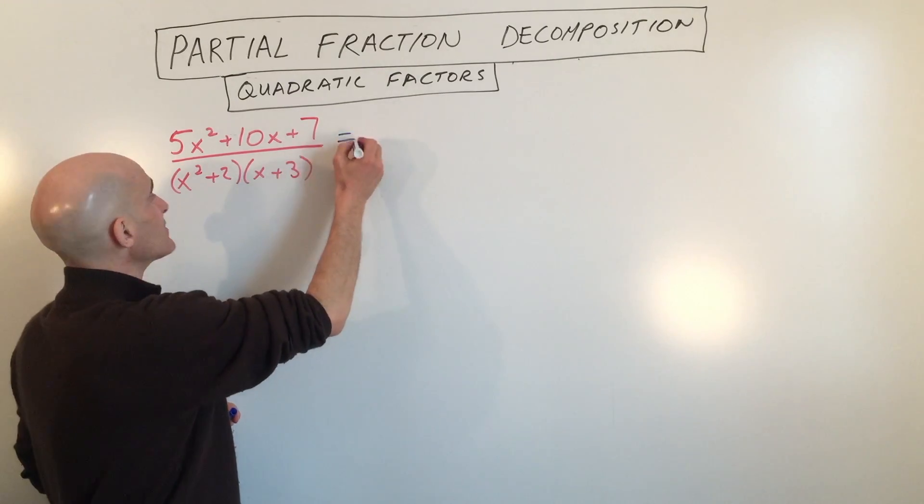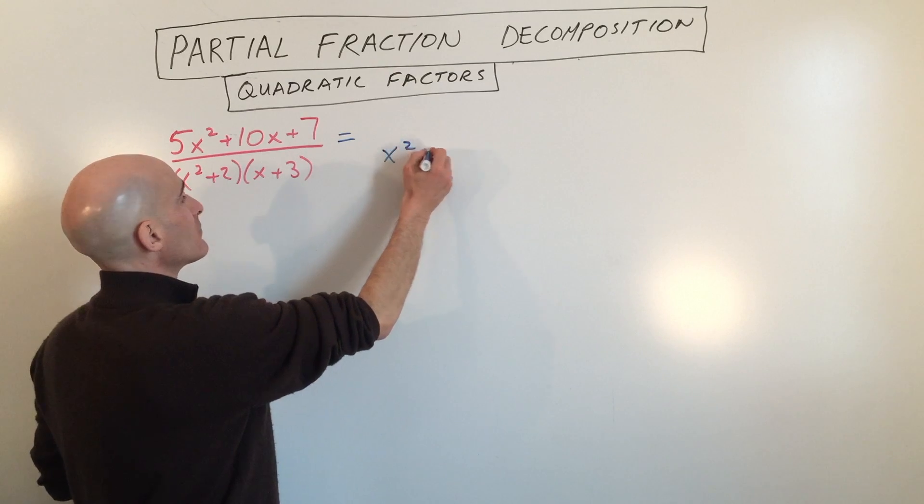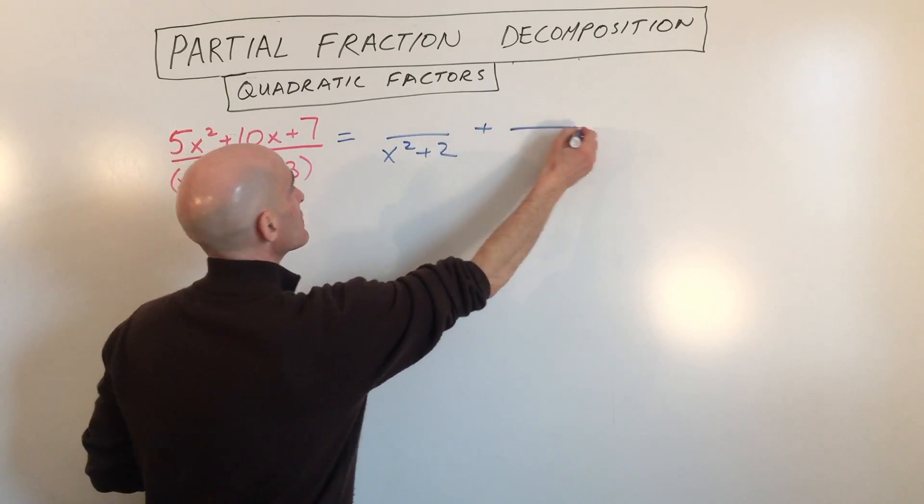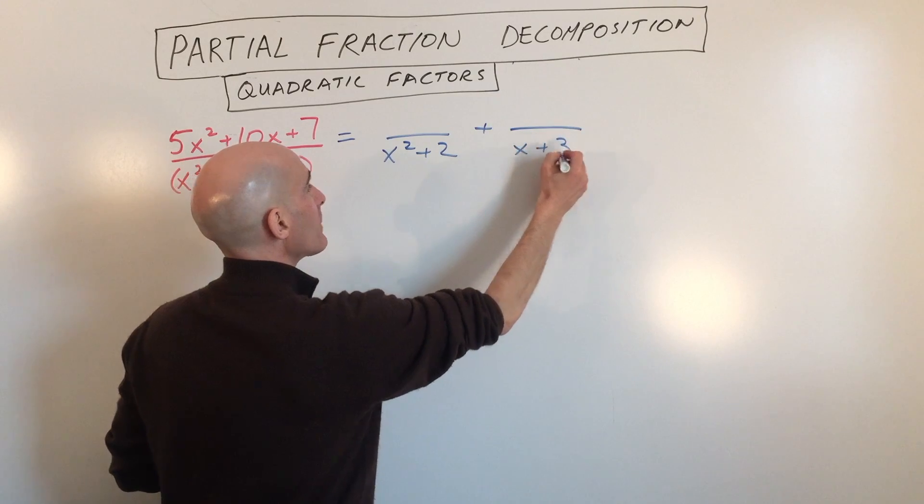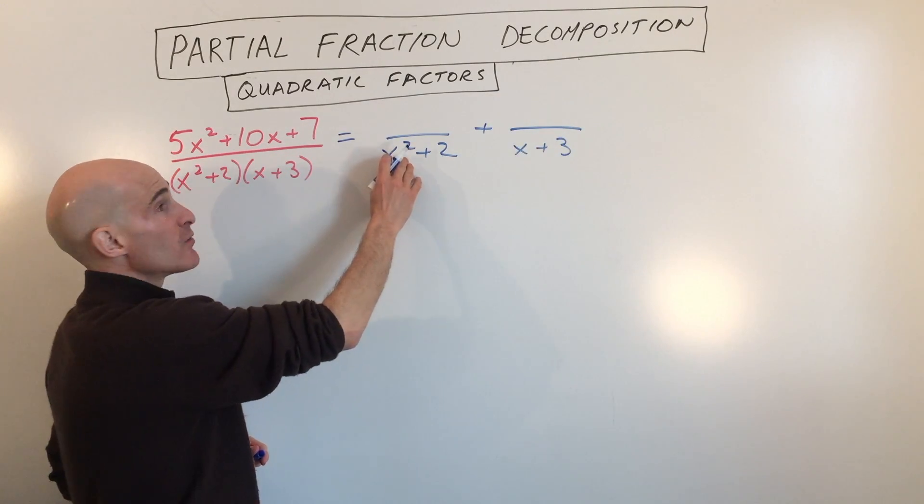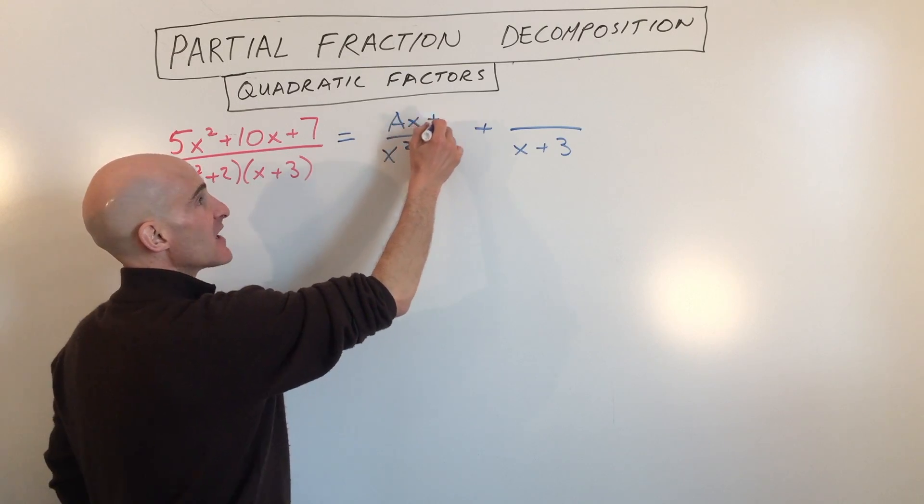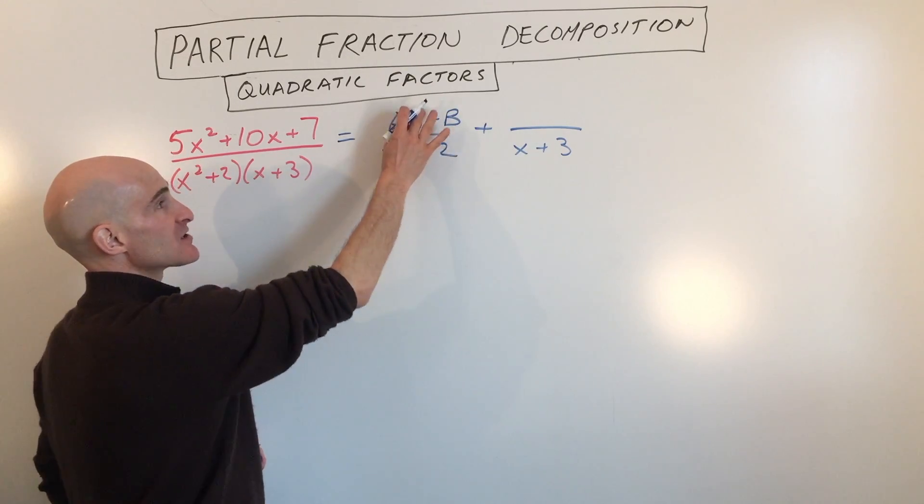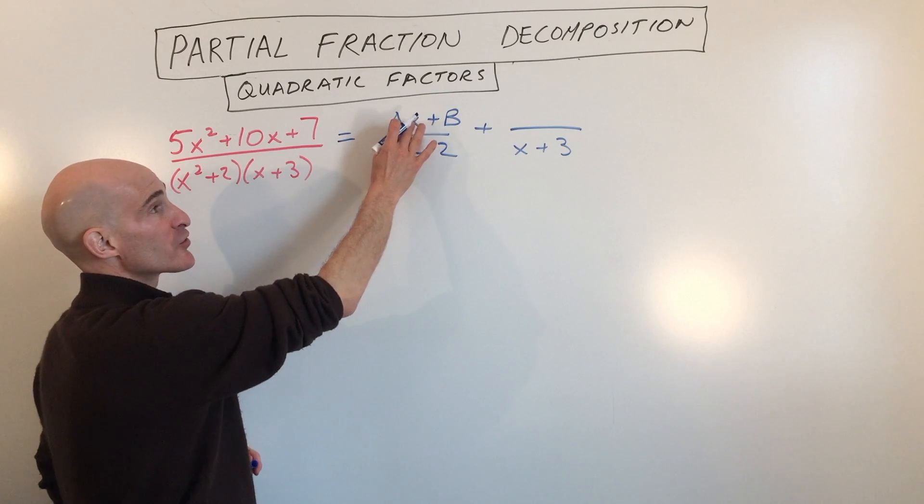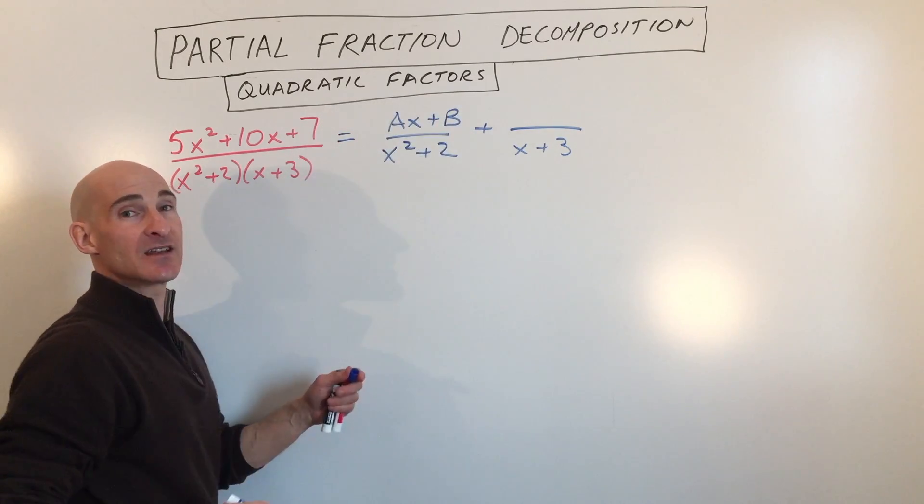So what we have is x squared plus 2 plus x plus 3. Now because this is a second degree, we want the numerator to be one degree lower. So I'm going to write this as ax plus b. See x to the first, this is x squared, this is one degree lower. And we go in descending order.